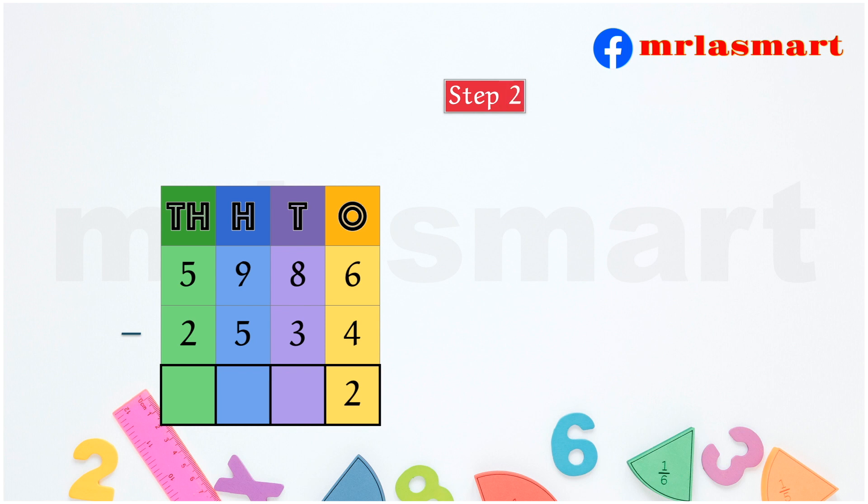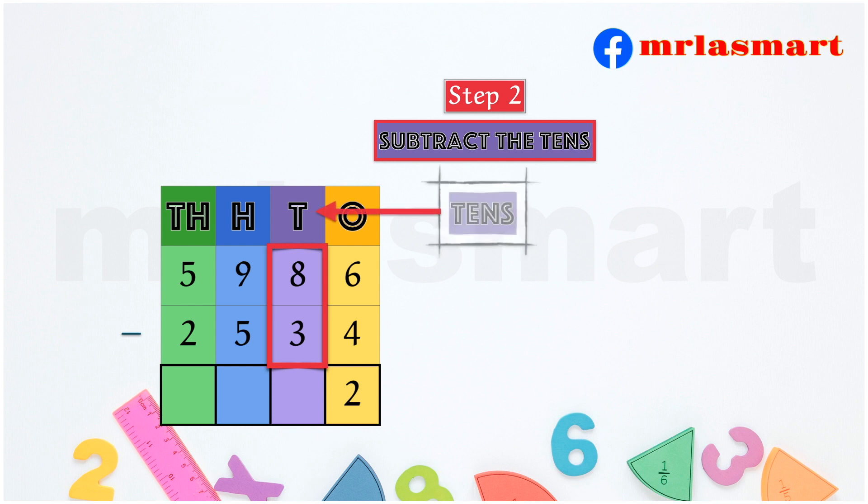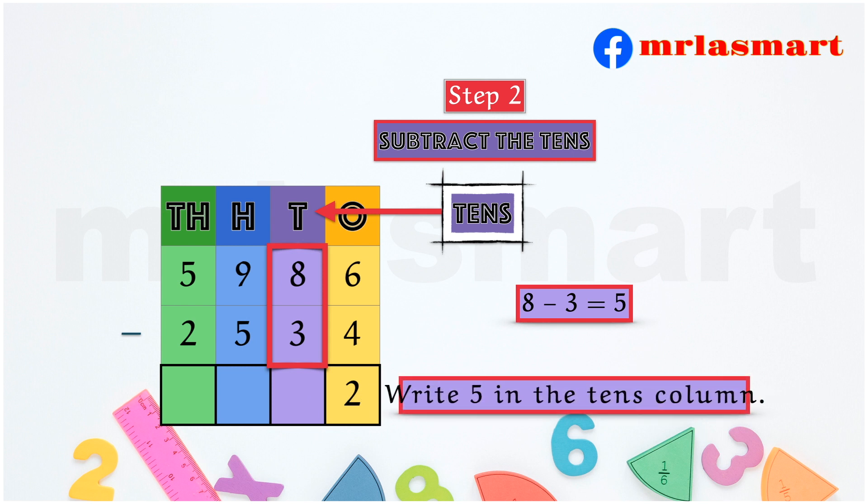Step 2. Subtract the tens. 8 minus 3 equals 5. Write 5 in the tens column.